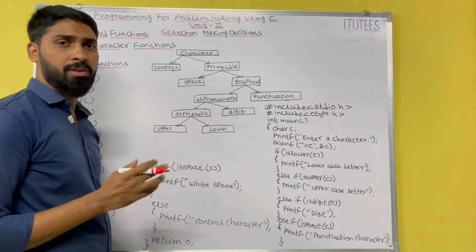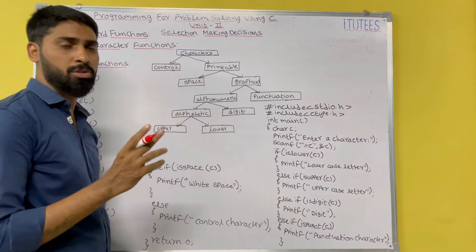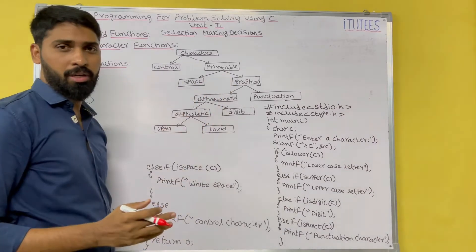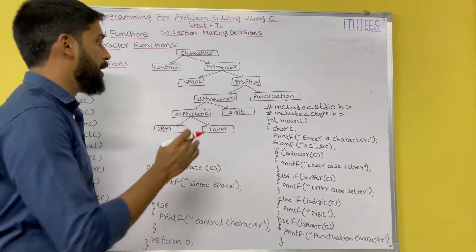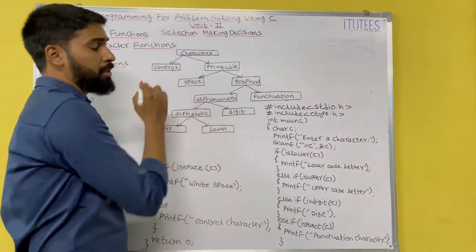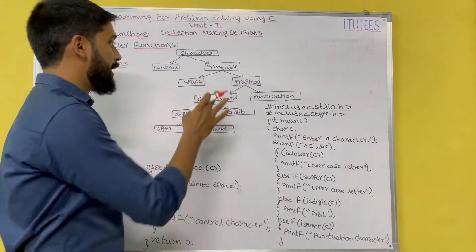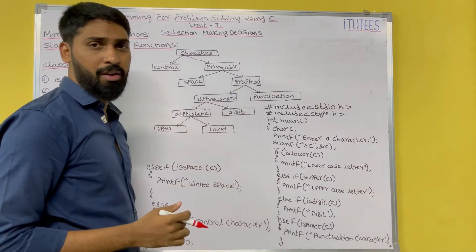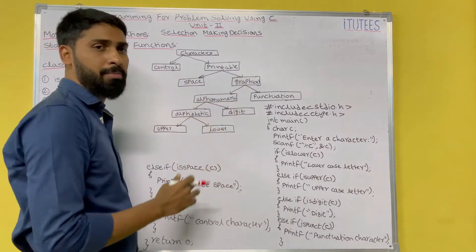In the keyboard we have different types of keys. These keys belong to two types: one is the control keys, another one is printable keys. Control keys are nothing but arrows and enter. Coming to printable, it means except the control keys, all the remaining keys are printable keys. In printable we have two types: one is space, another one is graphical. Space key is nothing but white space, and graphical means the remaining keys.